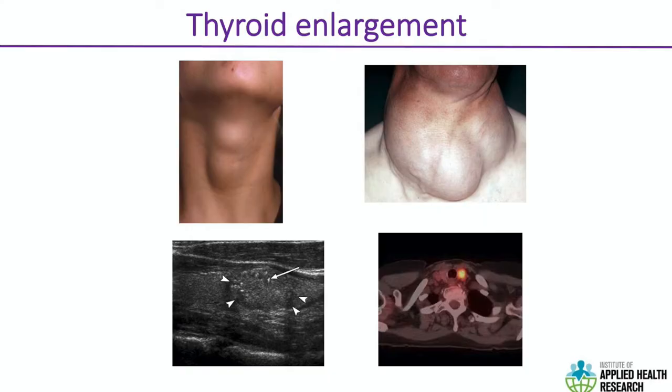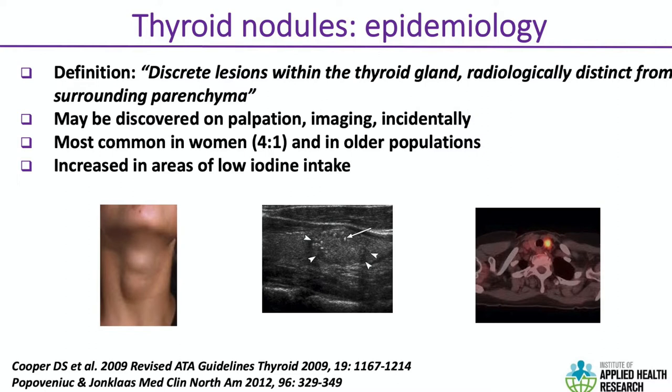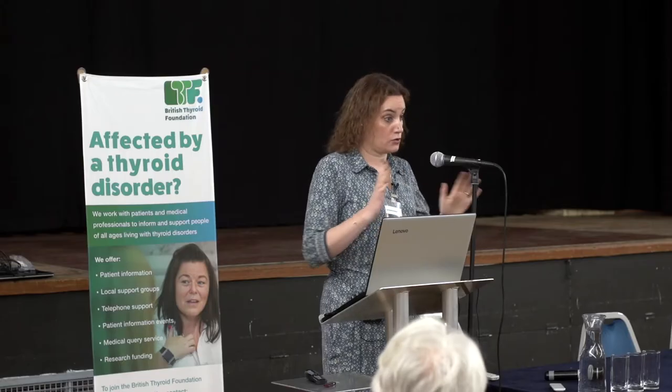Thyroid enlargement can take many forms and be identified in many different ways — from localized visible nodules to very large goitres. Increasingly, we find thyroid nodules and thyroid enlargement incidentally, when a patient has an imaging investigation for a non-thyroid-related reason. As shown, arrows on an ultrasound scan can indicate a thyroid nodule. A PET scan done for surveillance of another cancer can also reveal a thyroid nodule that lights up. Because more people undergo tests and survive cancers, we find more and more nodules.